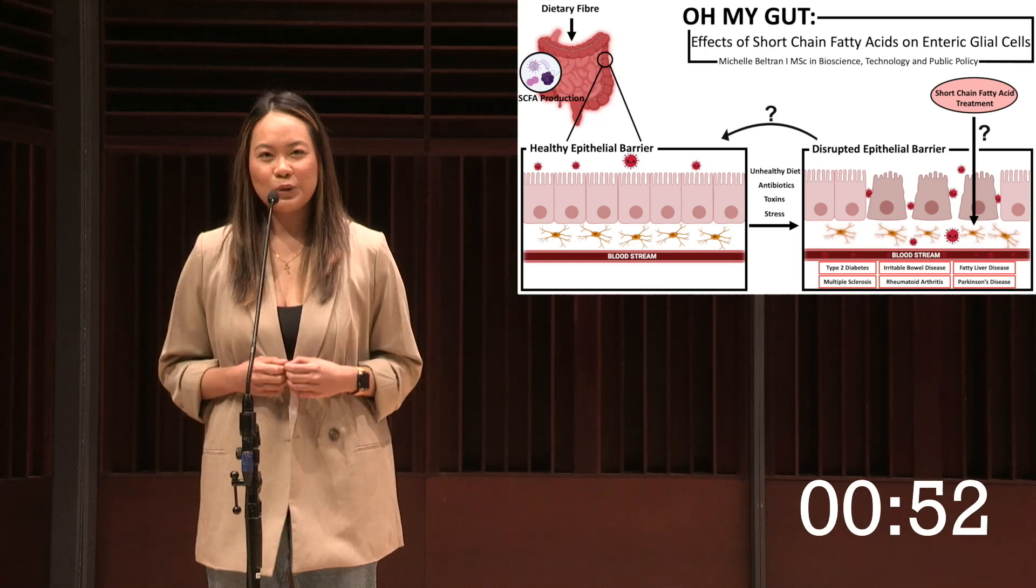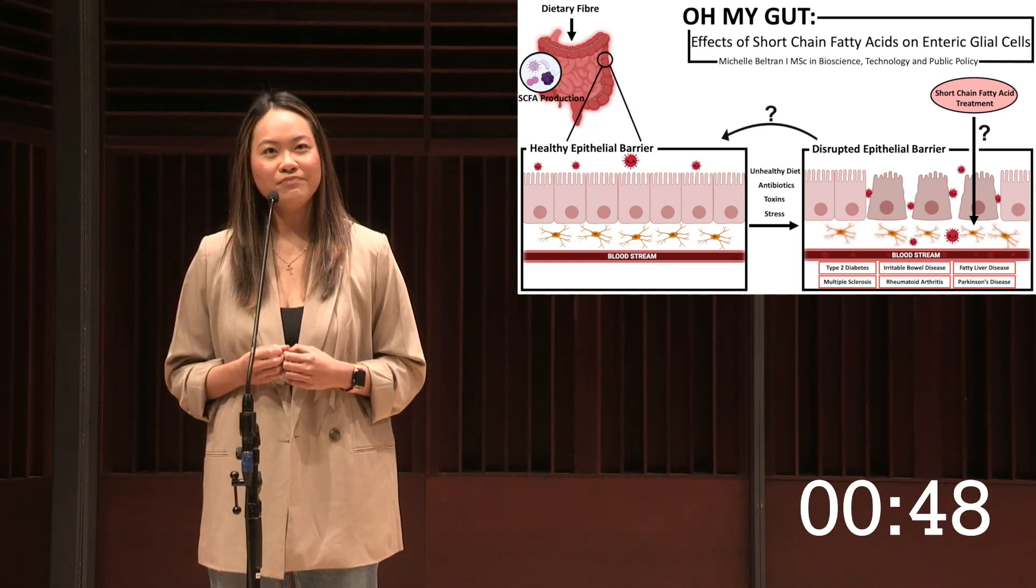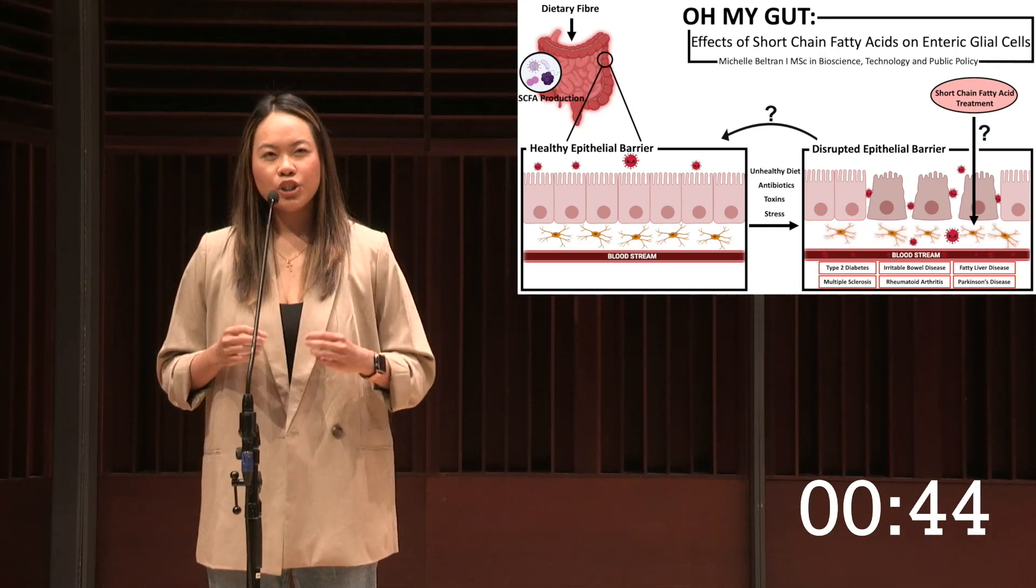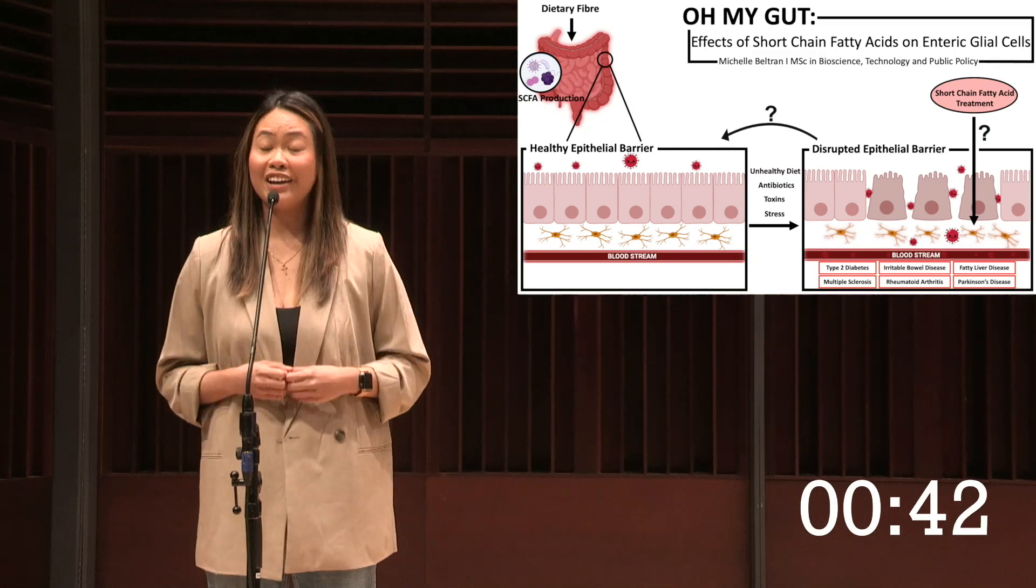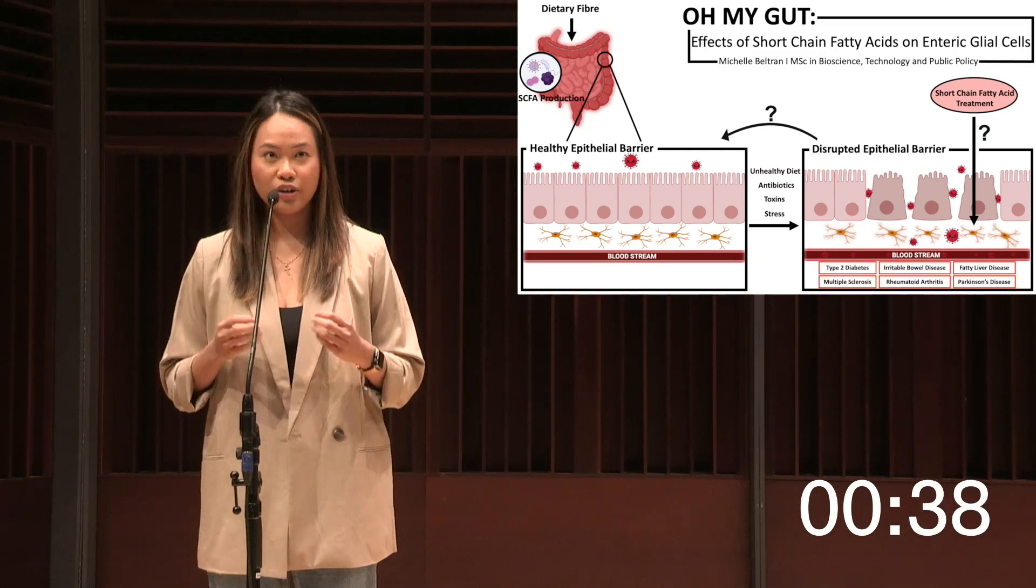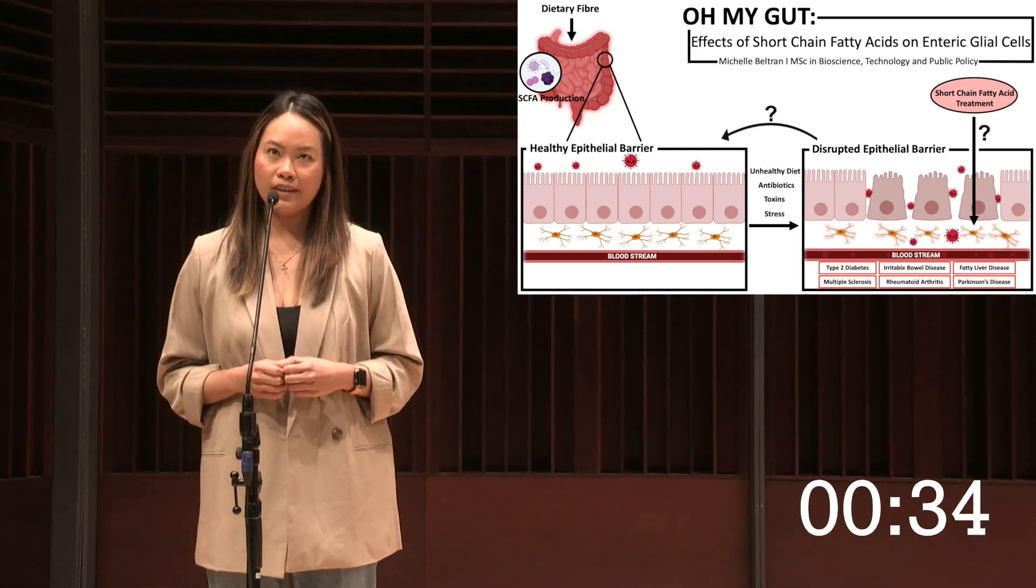I first expose the cells to toxins to stimulate a disrupted epithelial barrier. I then treat enteric glial cells with short-chain fatty acids to determine if short-chain fatty acid treatment returns enteric glial cells into their non-reactive state and if this leads to the improvement of the epithelial barrier.